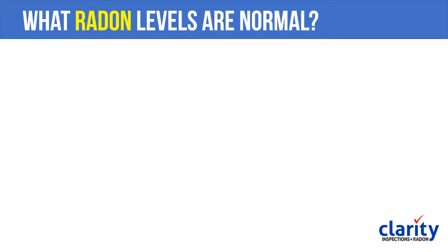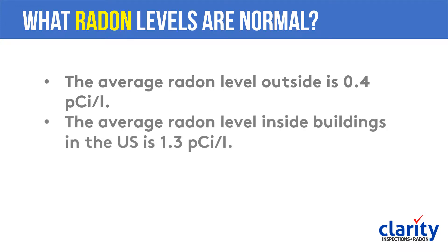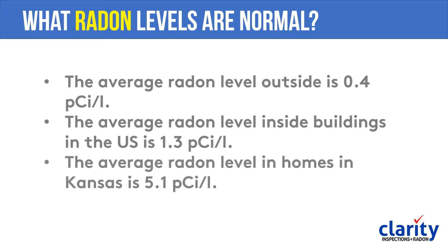So what radon levels are normal? The average radon level outside is 0.4 picocuries per liter. The average radon level inside buildings in the United States is 1.3 picocuries per liter. And the average radon level in homes in Kansas is 5.1.